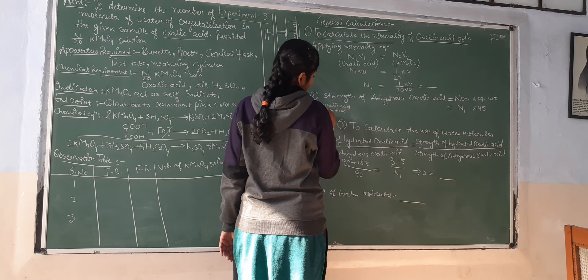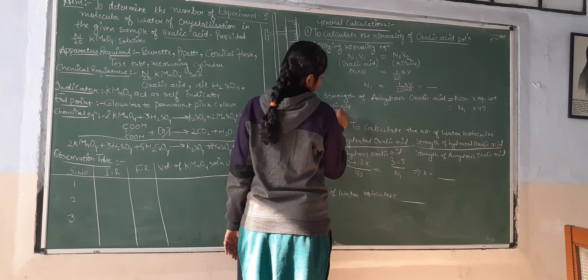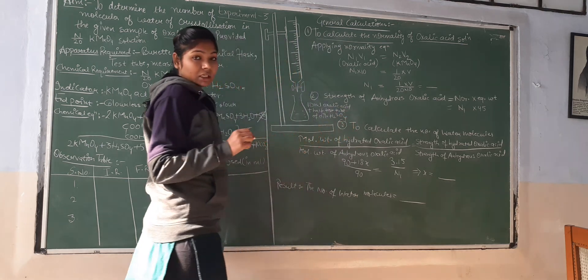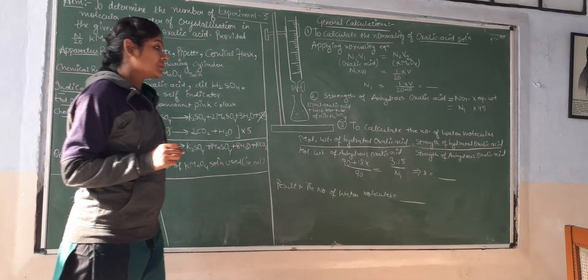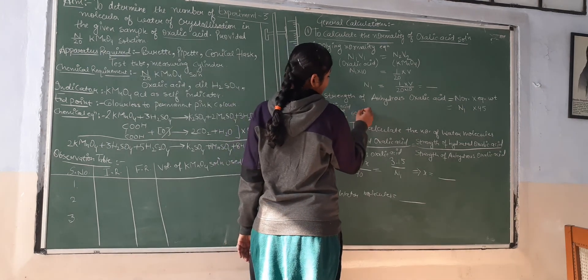Add dilute oxalic acid, shake it, and then heat to 60 to 70 degrees.